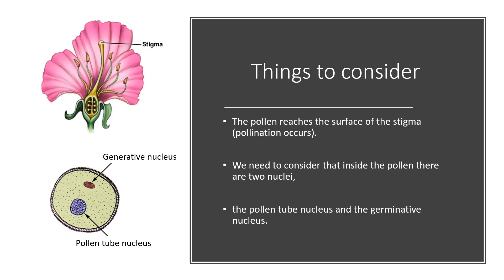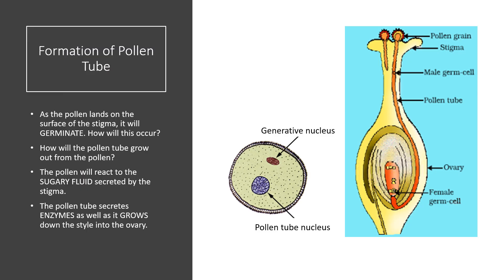The pollen lands on the surface of the stigma — that is pollination. This pollen will react to the sugary fluid on the surface of the stigma, releasing an enzyme so that the pollen tube will grow. Inside the pollen there are two nuclei: the first to enter the tube is the pollen tube nucleus, followed by the generative nucleus, which contains the cell.